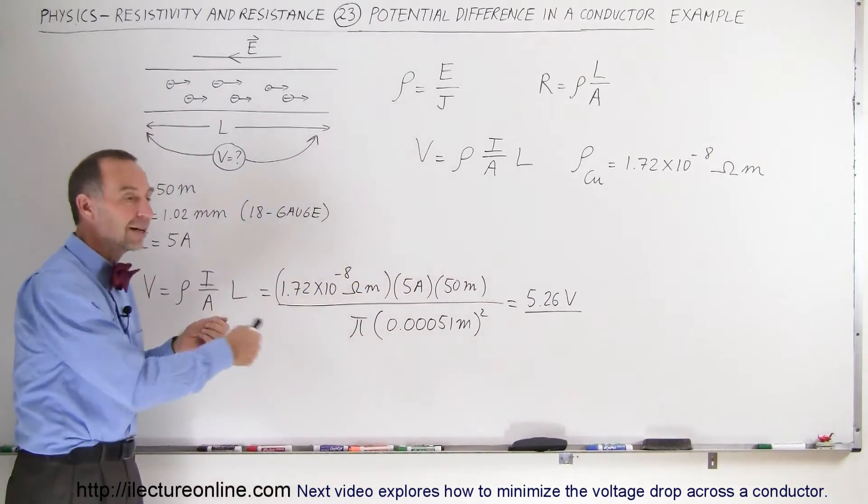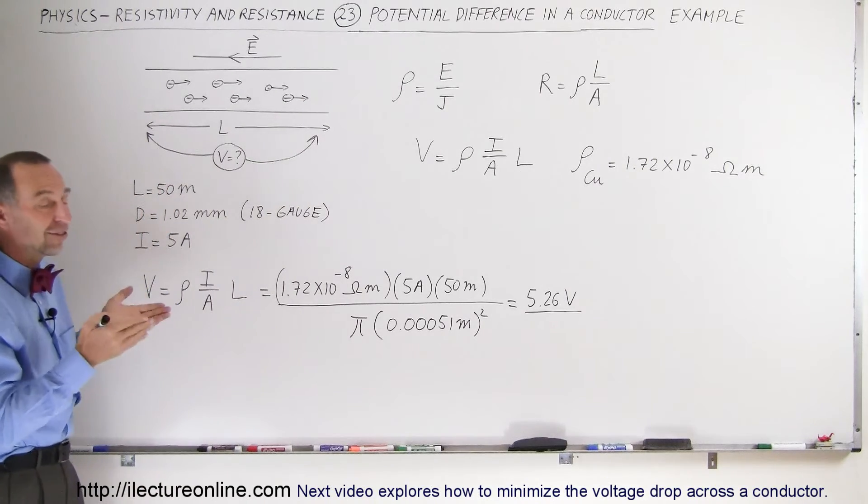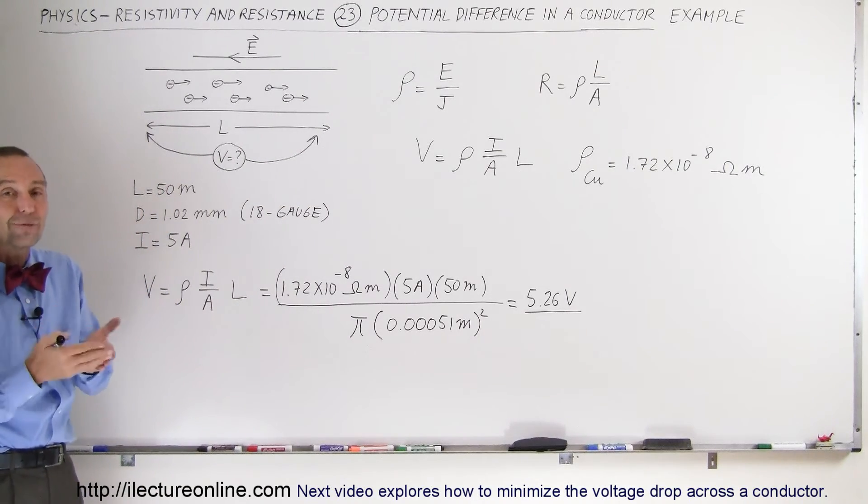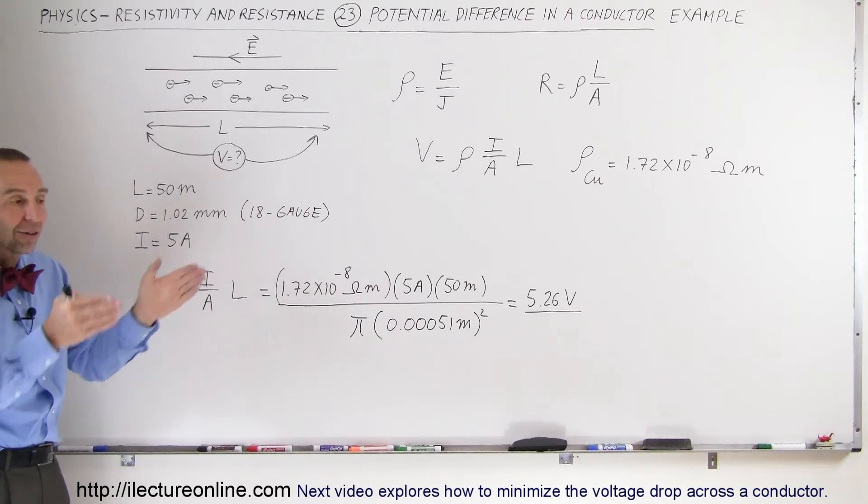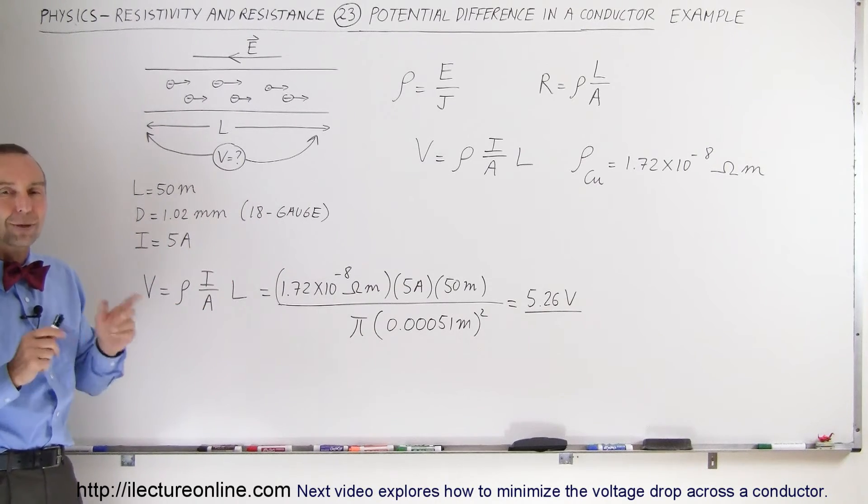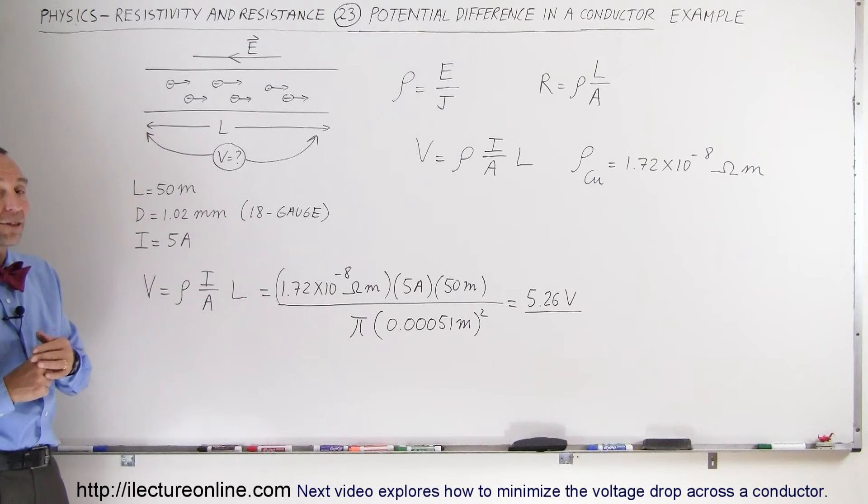So your output at the output socket is not necessarily the 117 or 120 volts you were expecting. It can be a little bit less because you lost some of the voltage drop across the wire. And 5 volts is not insignificant.